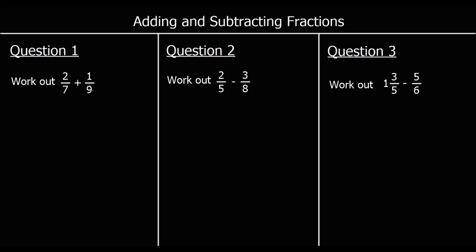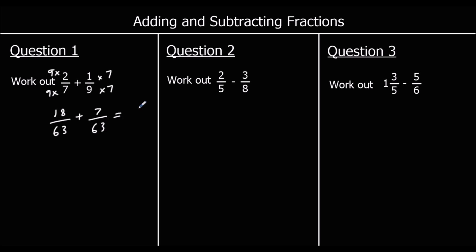Question one: work out two-sevenths plus one-ninth. We need to make the denominators the same, and we'll do that by multiplying top and bottom of two-sevenths by nine, and top and bottom of one-ninth by seven — both denominators will be sixty-three. Nine times two is eighteen over sixty-three, plus seven over sixty-three. Eighteen plus seven is twenty-five, so the answer is twenty-five over sixty-three.